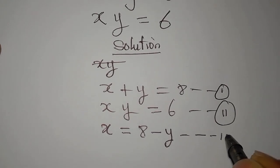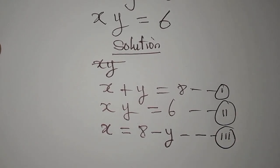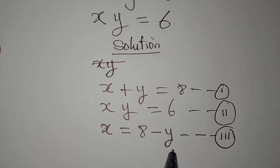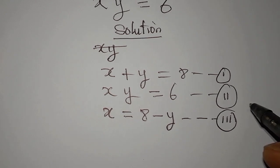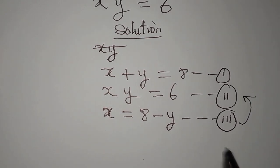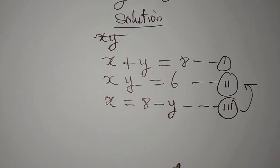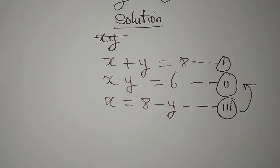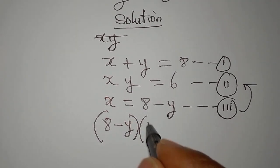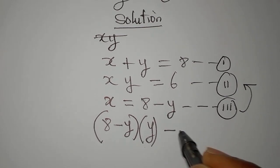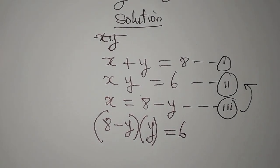This is obtained from equation 1. And then we shall call it equation 3 so that when we have the value of y, we will put it right into equation 3 to get the value of x. Now, what do we do? Let's put this one right into equation 2. And if we do that, this x in equation 2 will turn to 8 minus y. And then this y here will come over here. This is equal to 6 from equation 2.